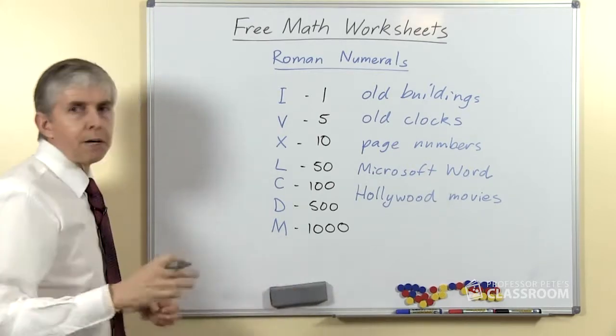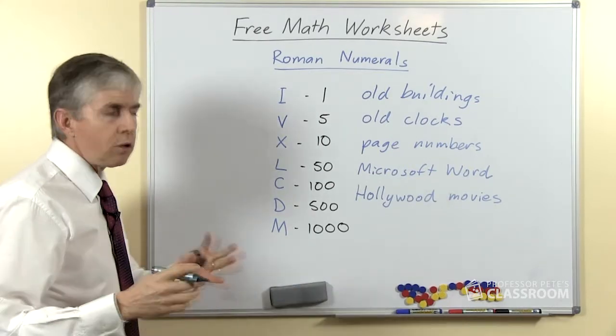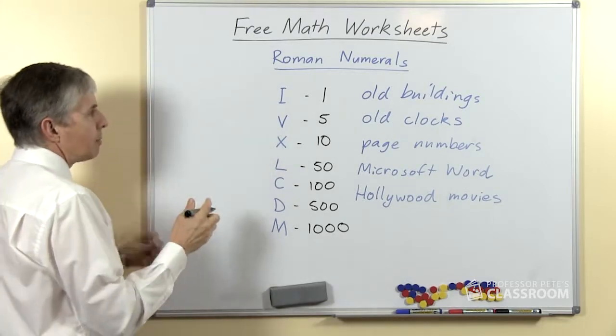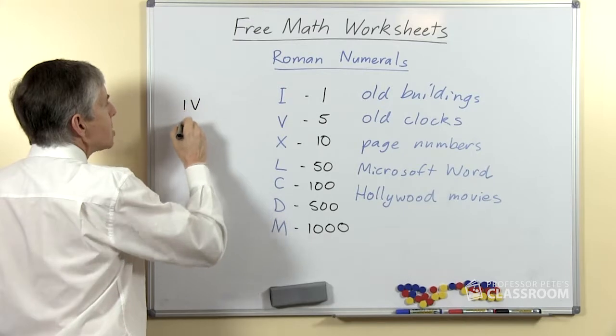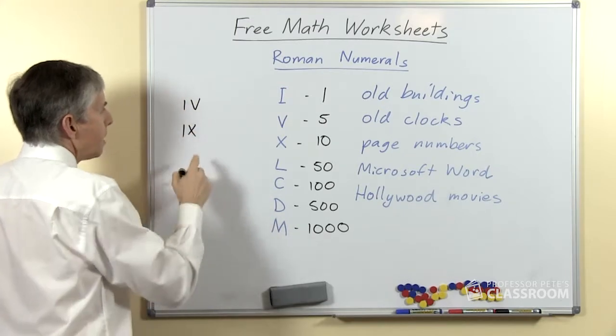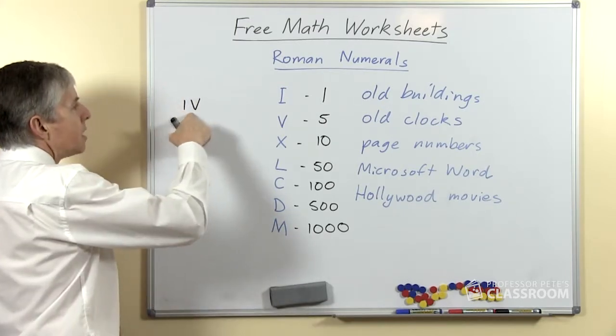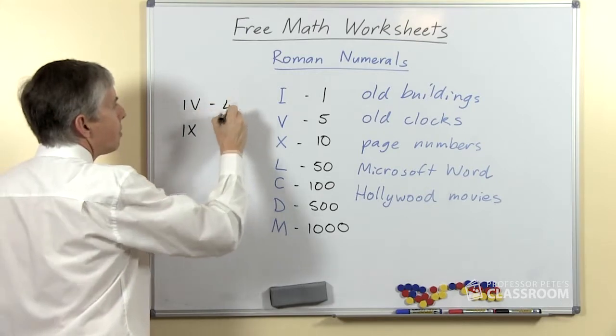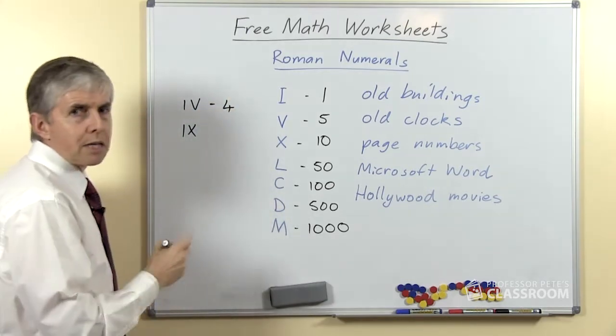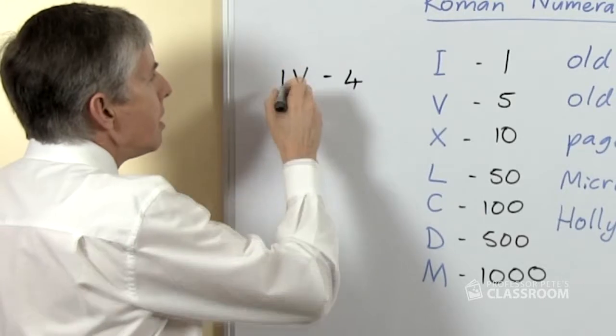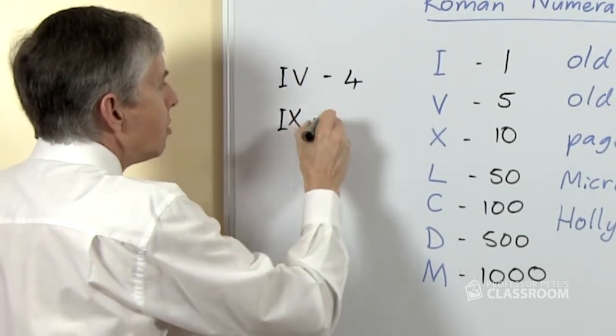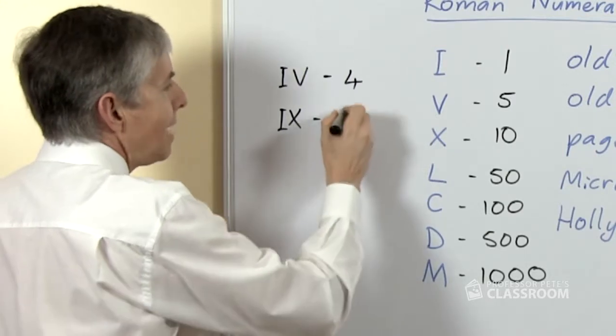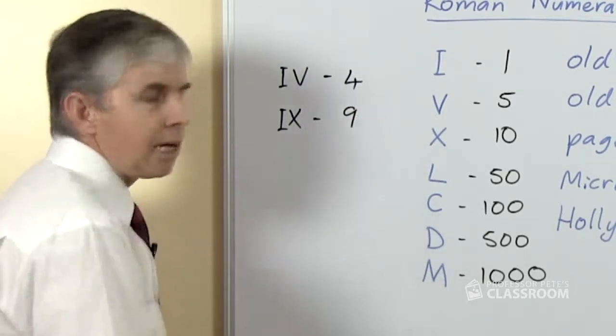However, there's one tricky part that I must show you before you know the system and will be able to make up your own numbers. With numbers like this, if the I is in front of the V, that represents 4. So there's a subtraction method used in the Roman system, and I before X, you can probably work out now, is 9—it's 1 less than 10.